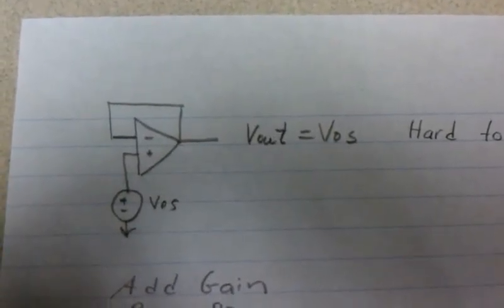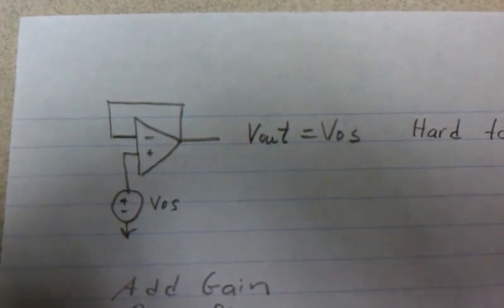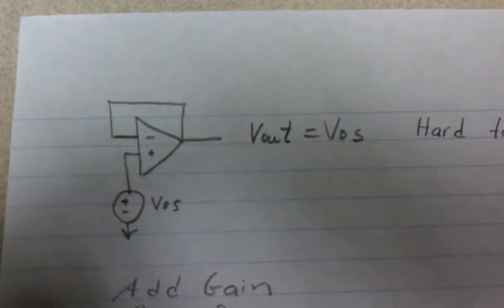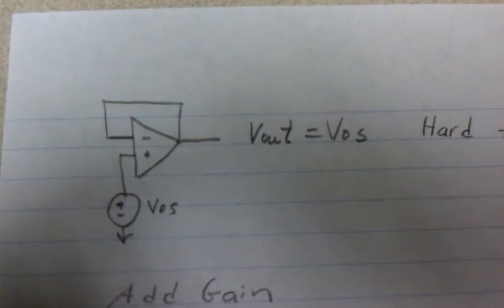The first method to measure V offset would be to configure the circuit as shown into a buffer circuit, which essentially V out should be V offset.